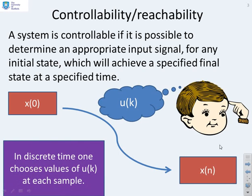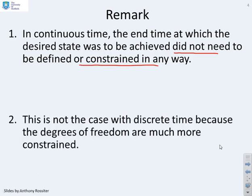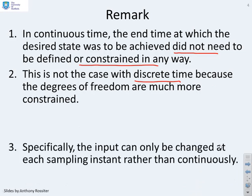The key point is that we need to use at least n samples in discrete time to make sure that we've got sufficient degrees of freedom in the input sequence u. In continuous time, the end time at which the desired state was to be achieved did not need to be defined or constrained in any way because u of t can be changed continuously. In discrete time, your degrees of freedom are just the inputs at the specific sample, so they're much more constrained.